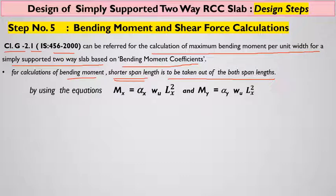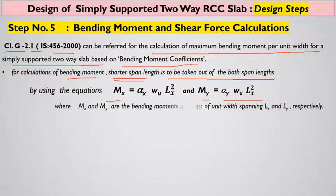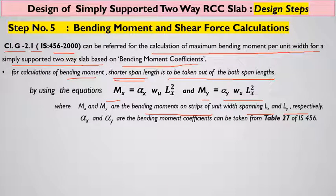The equations are: Mx = αx × wu × Lx² and My = αy × wu × Lx², where Mx and My are the bending moments from strips of unit width spanning along the x direction (shorter span) and y direction (longer span), respectively.